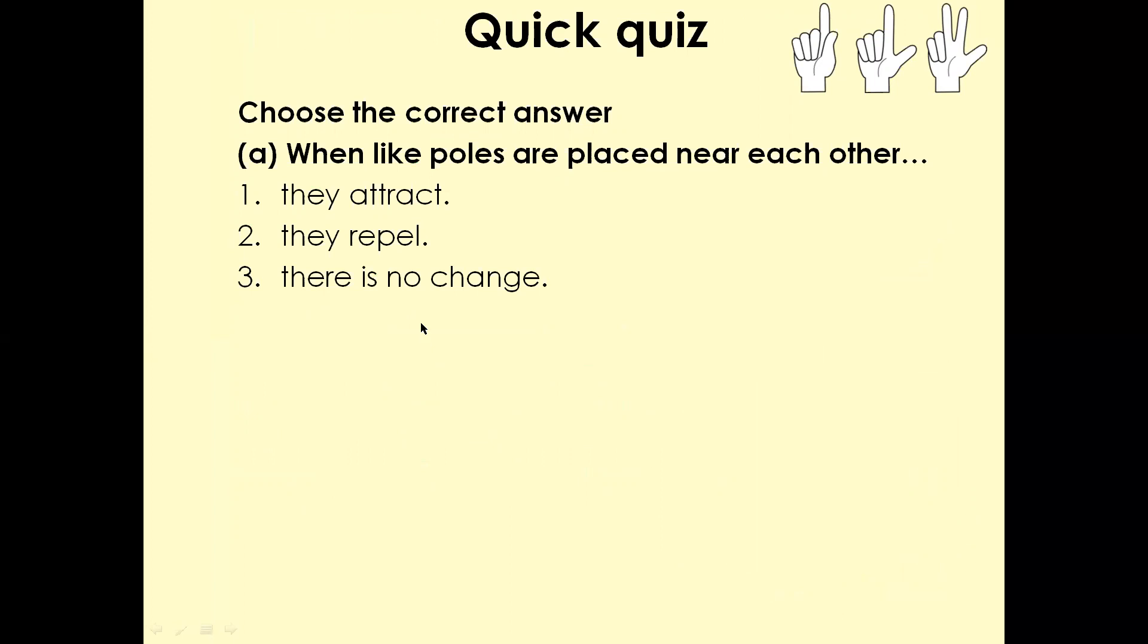Quick quiz for us. Choose the correct answer. Question number one. When like poles are placed near each other, the options are they attract, they repel, there's no change. Three, two, one. The answer is they repel.